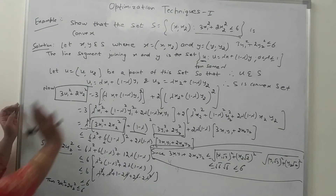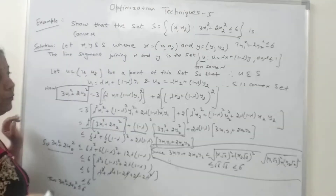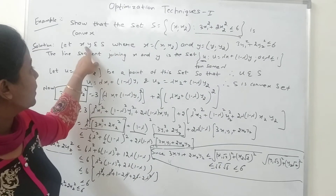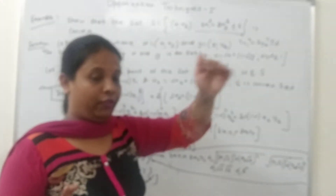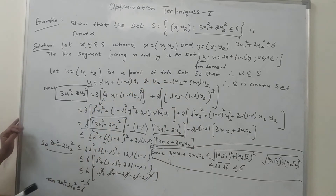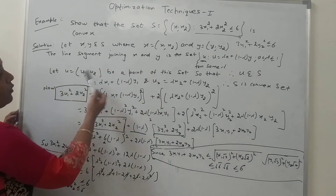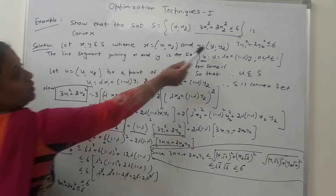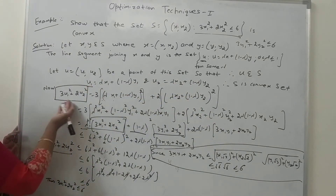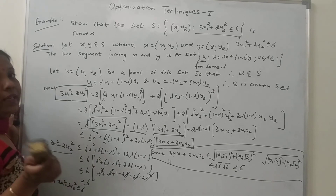It is very easy students. You just take two points X and Y from the set. If they are two-tuples you take two coordinates, otherwise three. Both satisfy the given condition. Then take a point U = λX + (1−λ)Y, where X and Y are two-tuples, so U = (U1, U2) with U1 = λX1 + (1−λ)Y1 and U2 = λX2 + (1−λ)Y2. Prove 3U1² + 2U2² ≤ 6, so U belongs to S. This is how to prove a set is convex.